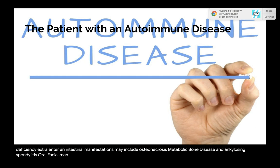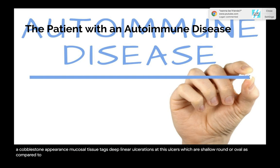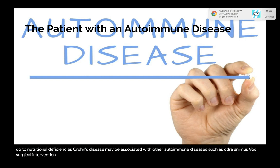Oral-facial manifestations of Crohn's disease include diffuse labial and buccal swelling, hyperplastic plaques on the buccal mucosa with a cobblestone appearance, mucosal tissue tags, deep linear ulcerations, aphthous ulcers (shallow, round, or oval), and a possibly higher prevalence of periodontitis. Angular cheilitis or glossitis may occur due to nutritional deficiencies. Crohn's disease may be associated with other autoimmune diseases such as celiac disease, RA, and MS. Bowel obstructions may require surgical intervention.